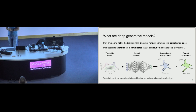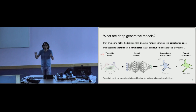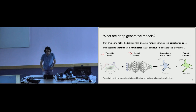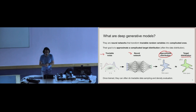First, I want to start with a definition of a deep generative model. In this case we are going to be working with neural networks. The neural networks receive some tractable noise as input — for example, Gaussian noise or any other distribution that is easy to sample from or evaluate densities with. We then have a neural network that processes that noise to generate more complicated random variables, producing an approximate distribution at the output. In many cases we want this complicated distribution to fit a particular target distribution, which could be the data distribution or any other distribution we are interested in.